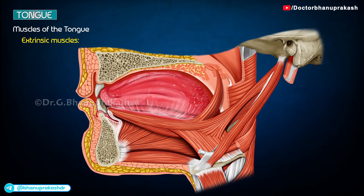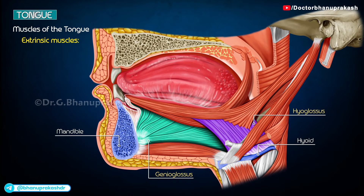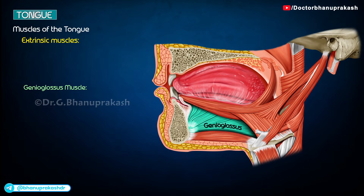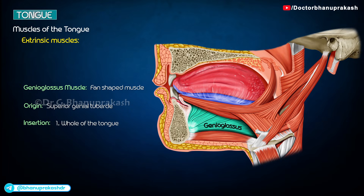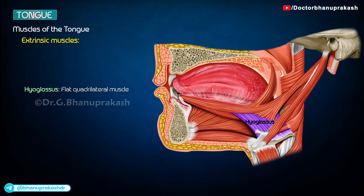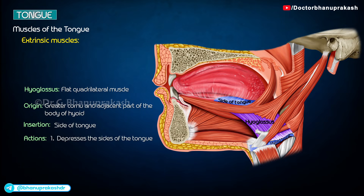The extrinsic muscles attach the tongue to the mandible, hyoid bone, styloid process, and palate on each side. Genioglossus is fan-shaped, taking origin from the superior genial tubercle, and is inserted into the entire substance of the tongue with fibers radiating from tip to base; the lowest fibers insert onto the hyoid bone. Acting together with its counterpart, it protrudes the tongue. Hyoglossus is a flat quadrilateral muscle originating from the greater cornu and adjacent body of the hyoid bone, inserted into the side of the tongue; it depresses the sides of the tongue, making the dorsal surface convex.